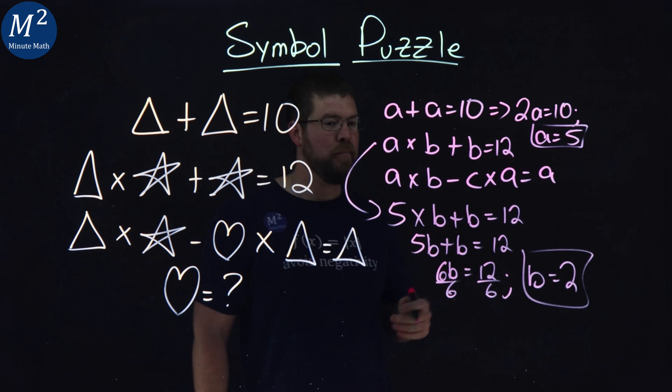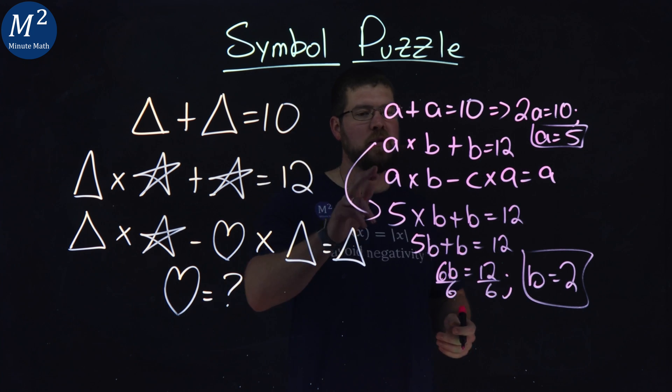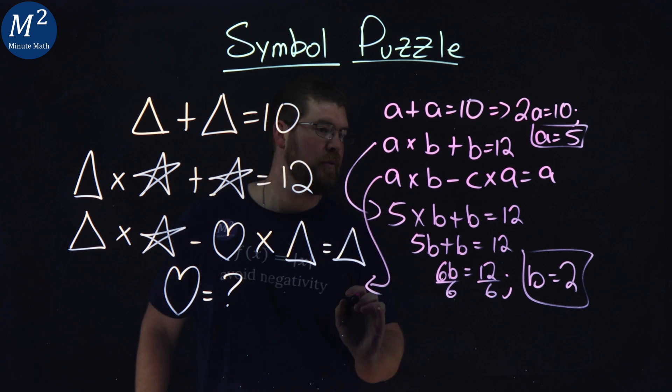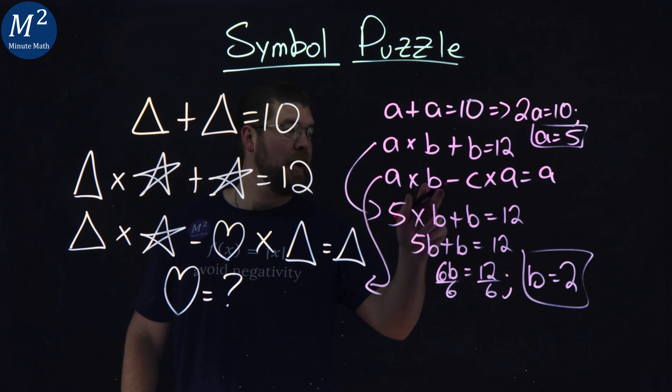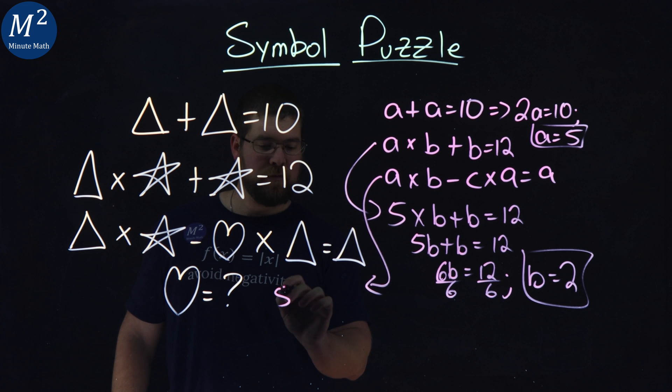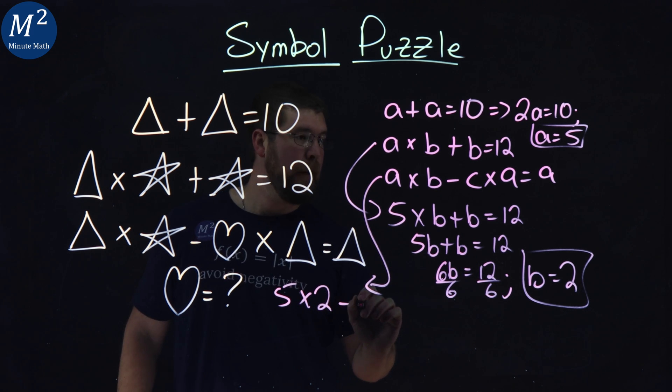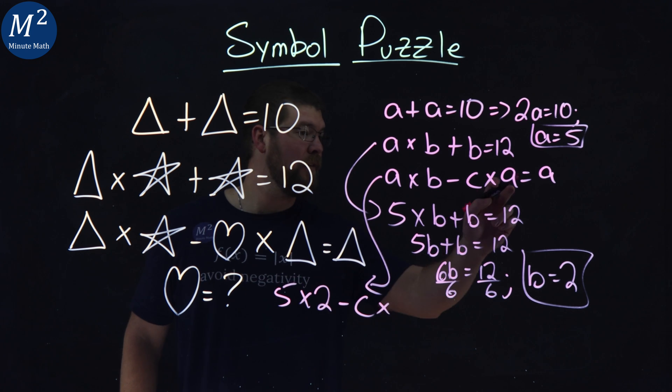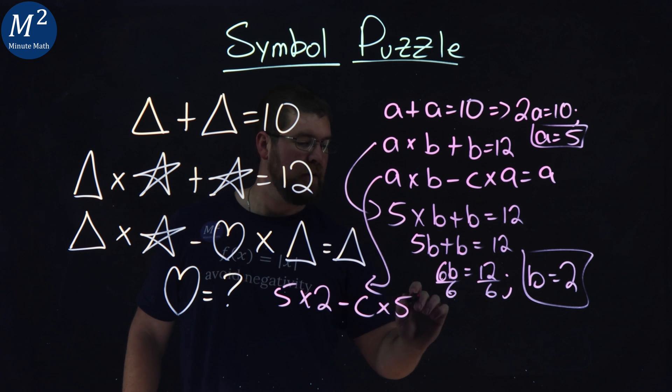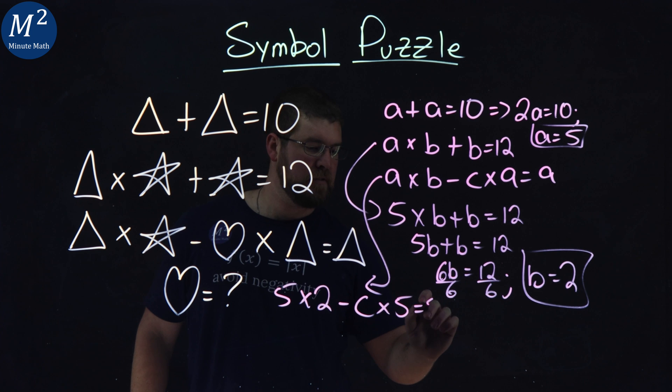So we have A and B. We need to find C. For that, we use our last equation. A times B, which is 5 times 2, minus C times A, which is 5, equals A, which is 5. Simplifying, 5 times 2 is 10.